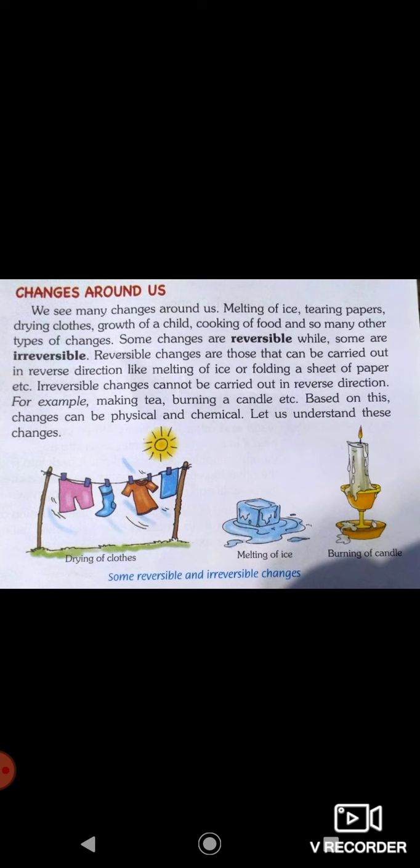Here you can see three pictures. Drying of clothes is a reversible change — if you put water on the clothes again, they will get wet again. Melting of ice is also a reversible change. Burning of a candle is an irreversible change — all the wax melts away and it cannot be reversed.